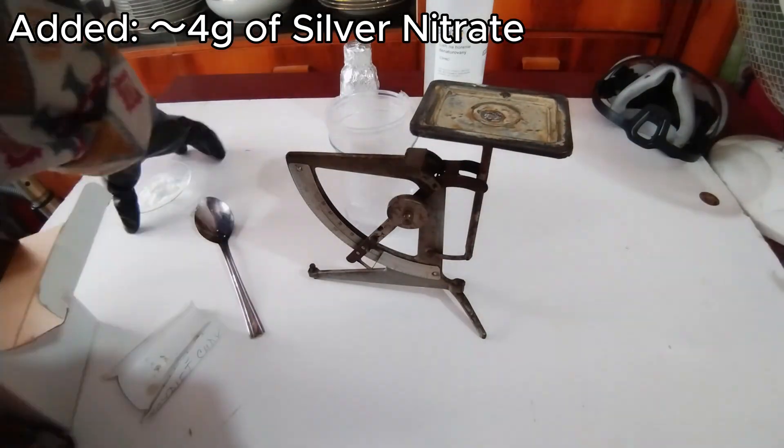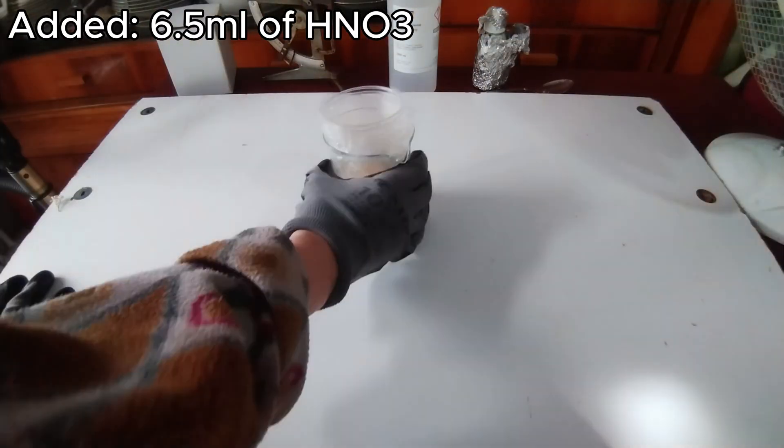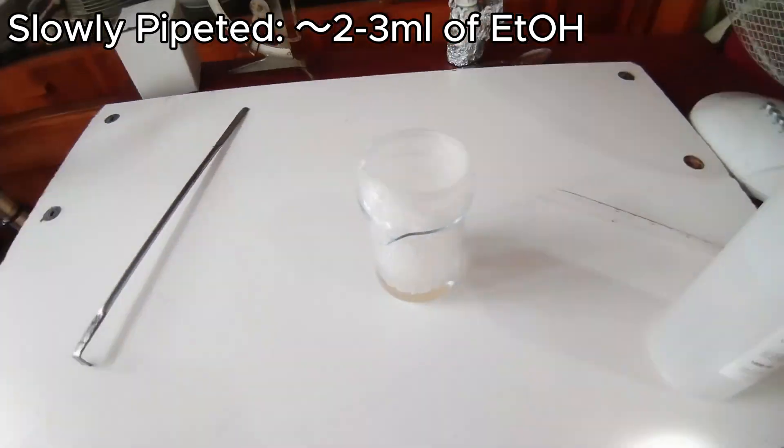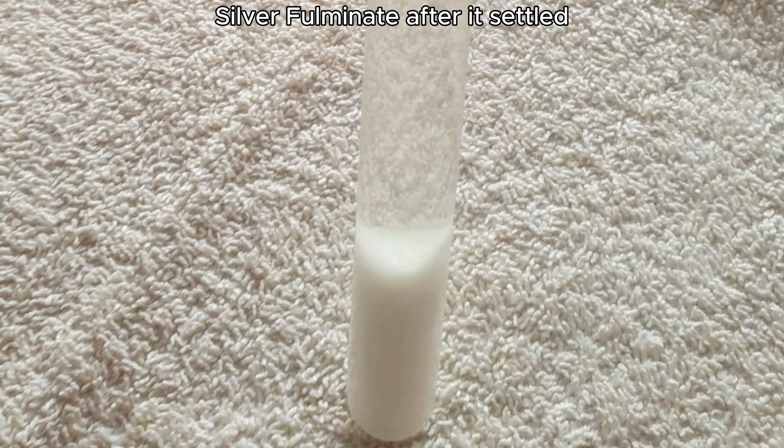I thoroughly mixed the silver nitrite and concentrated fulminate nitric acid and slowly pipetted 2 milliliters of ethanol. Anyways, let's get on with some experiments.